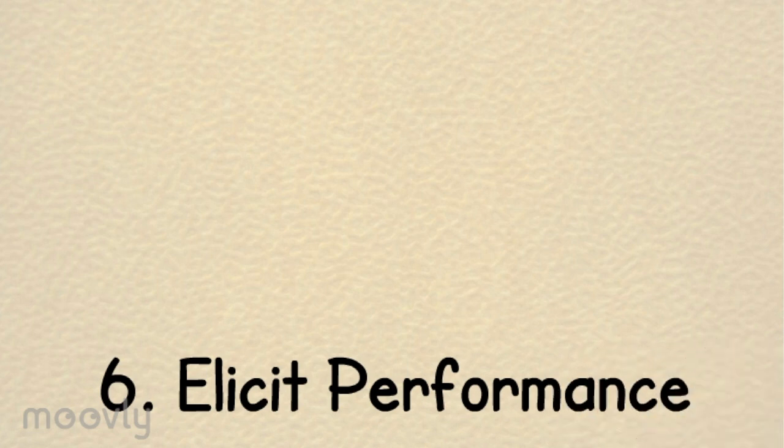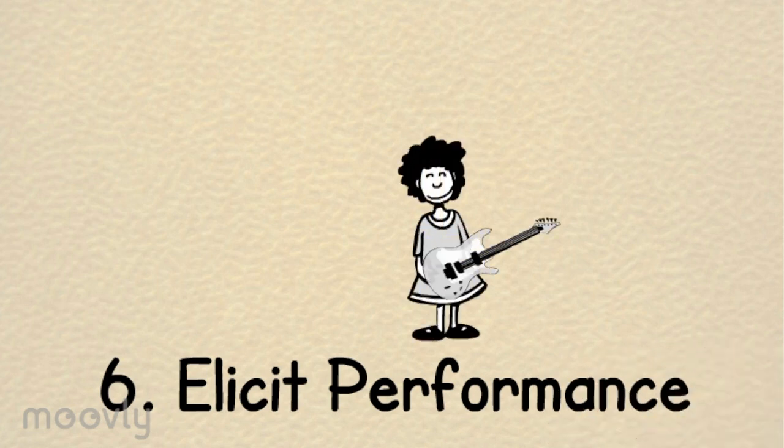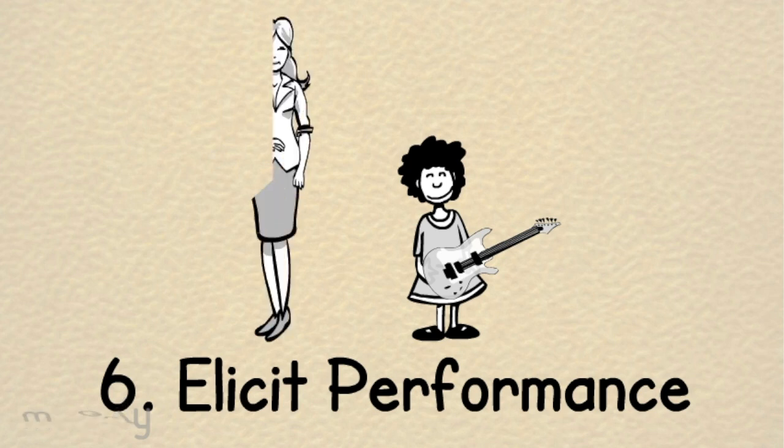Step six is to elicit performance. This is where the learner can practice and apply their skills. This gives the learner a chance to develop on their own under the guidance of their instructor.